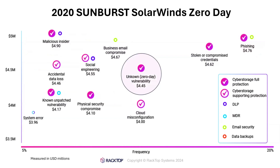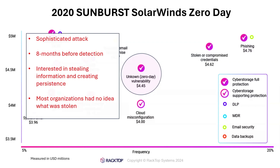The SolarWinds Sunburst attack in 2020 was very sophisticated — attackers got into the SolarWinds supply chain and inserted malicious code into the Orion network monitoring software update. When organizations deployed it, it would beacon out to a command-and-control server. This software ran for eight months before Palo Alto detected it — eight months of potential data theft and persistence creation. After discovery, organizations had no logging visibility to determine what data had actually been accessed or stolen.